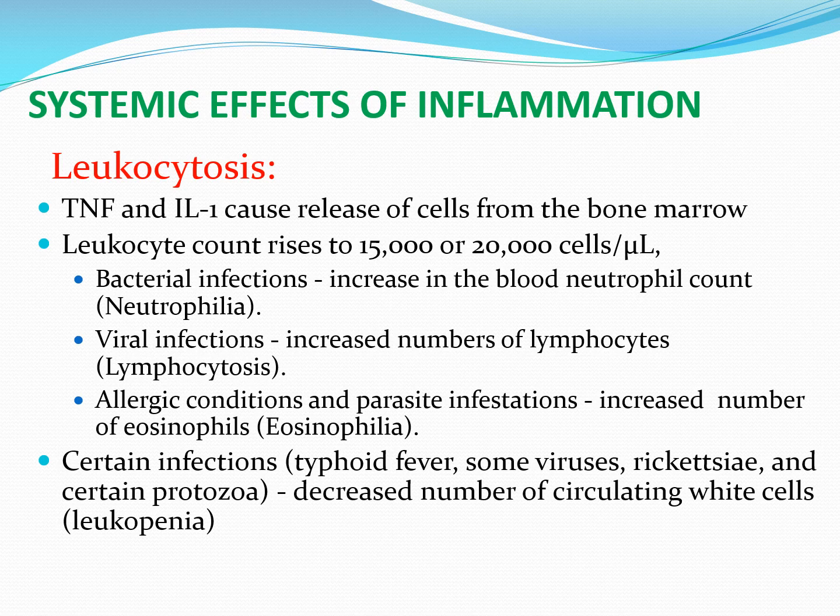There are always exceptions: not all inflammation leads to increased white cell count. Certain microorganisms — such as Salmonella typhi (typhoid fever), certain viruses, rickettsiae, and protozoa — suppress the bone marrow, preventing production of new white blood cells. Since inflammation is draining white cells from circulation while the bone marrow cannot replace them, the result is decreased circulating white blood cells, called leukopenia.